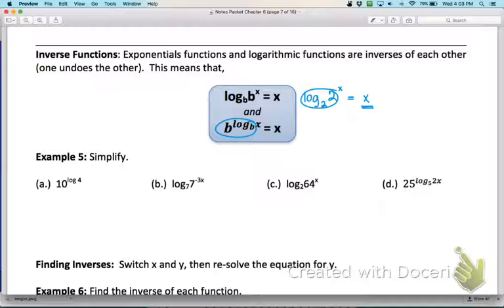So if we look at these examples down here, I have 10 to the log of 4 power. Don't forget that when we don't see a base written, the base is 10. So if I have 10 to the power of the log base 10, those two things undo each other and so we just end up with 4.